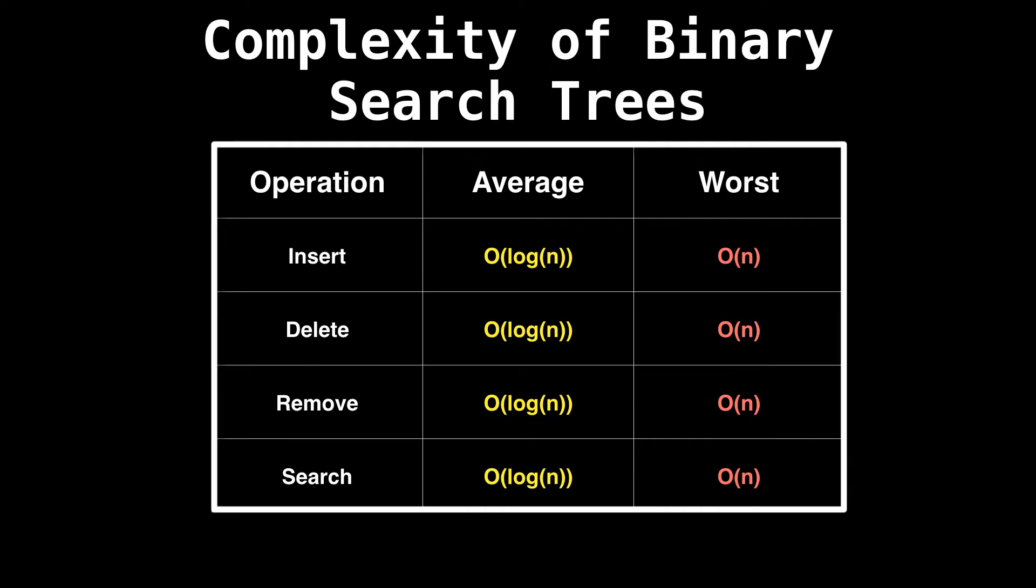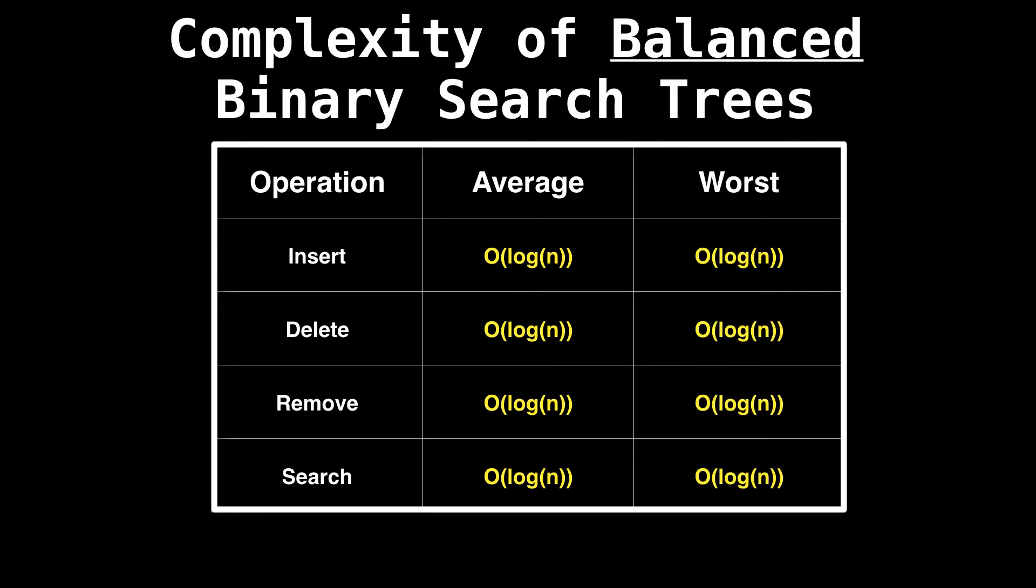In terms of complexity, a binary search tree has average logarithmic operations, which is quite good. However, the worst case still remains linear because the tree could degrade into a chain for some inputs. One such input is a sequence of increasing numbers. To avoid this linear complexity, we've invented balanced binary search trees in which the worst case is logarithmic for all operations, which makes them very appealing.